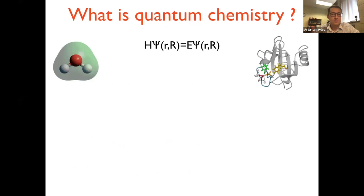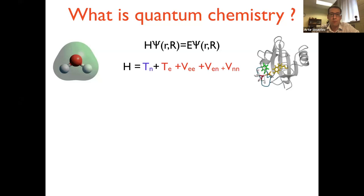What is quantum chemistry? It all starts with essentially applying the Schrödinger equation for molecules. Molecules are quantum objects, so there's no wonder that chemistry is described by the Schrödinger equation. We have electrons and nuclei — the small r's are electronic coordinates and the big R's are nuclear coordinates.